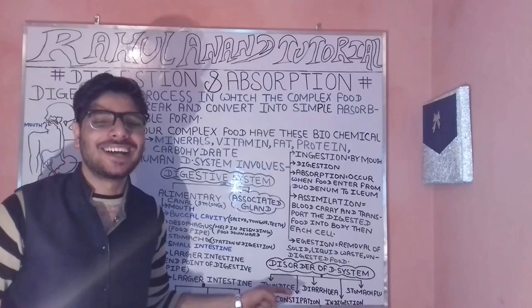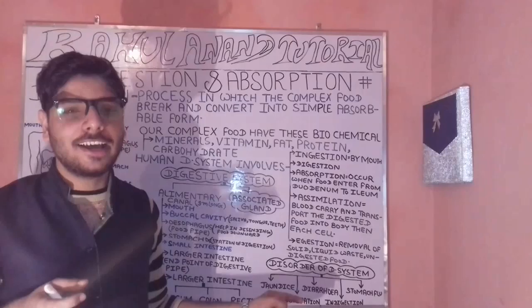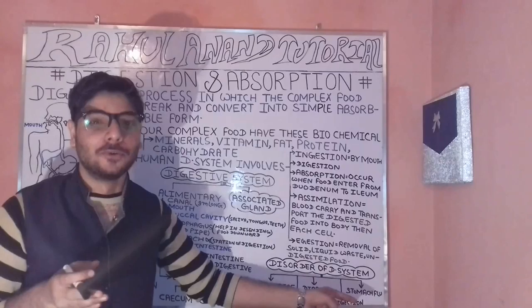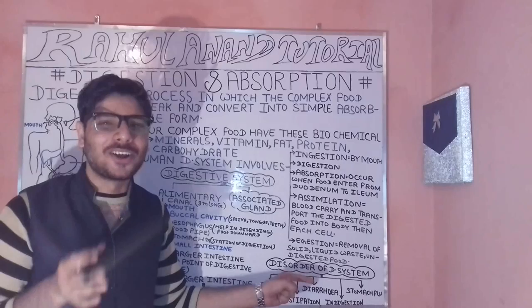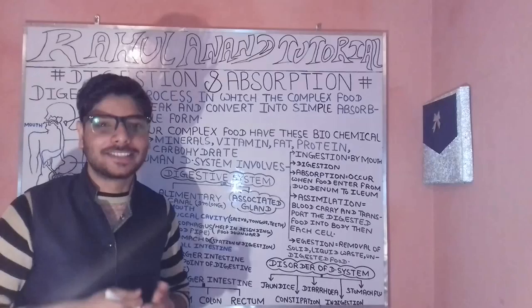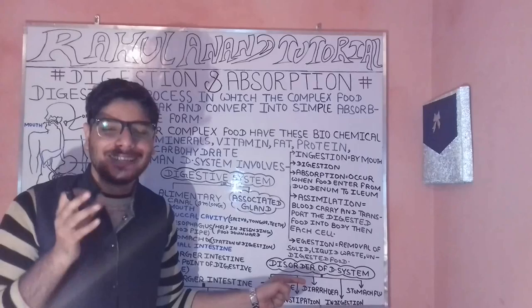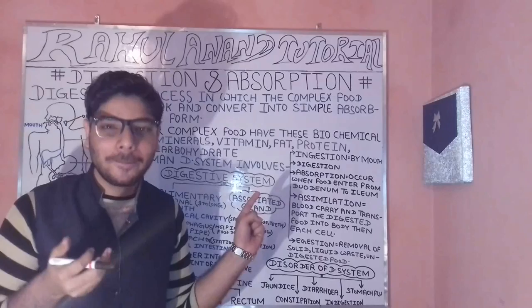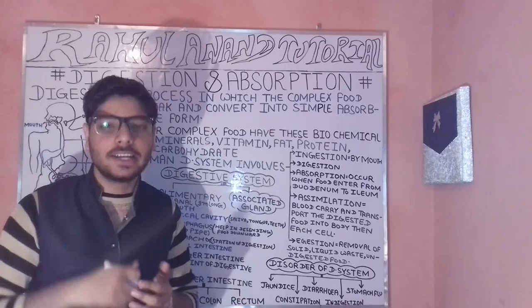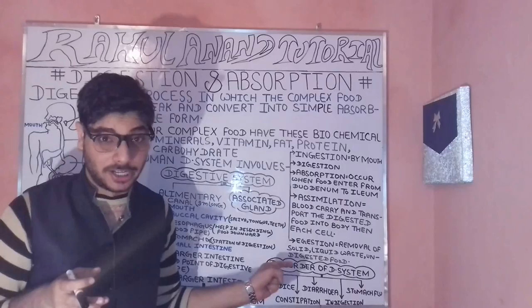Now let's understand the disorders of digestion. These include jaundice, diarrhea, constipation, and stomach flu. Jaundice — also called pilea symptoms — is a condition in which the overall secretion of bile pigment becomes larger. Due to hypersecretion of bile pigment, the eyelids take on a pinkish/yellow color. These are symptoms of jaundice, which is a disorder of the digestive system.